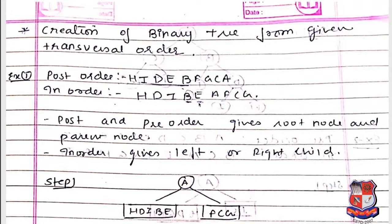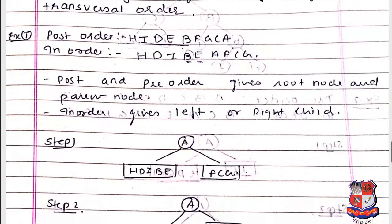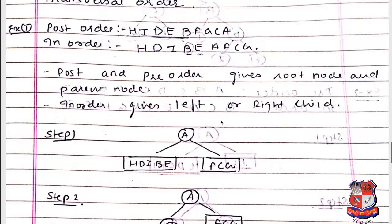Based on A's position in the in-order sequence, all nodes to the left — H, D, I, B, E — are left children of A, and nodes to the right — F, C, G — are right children of A.